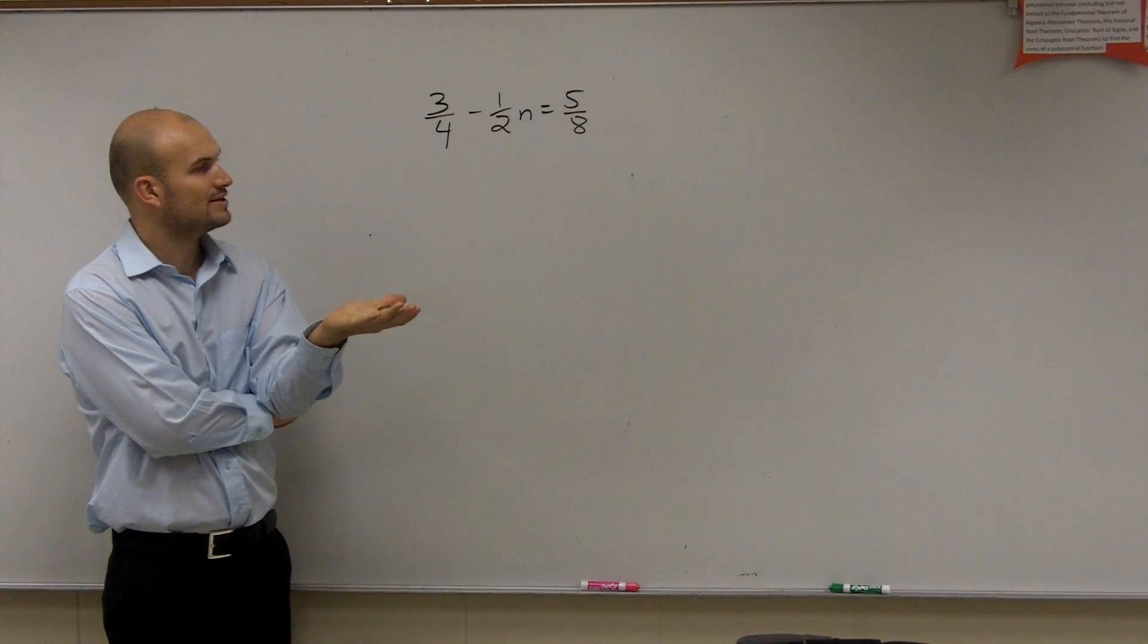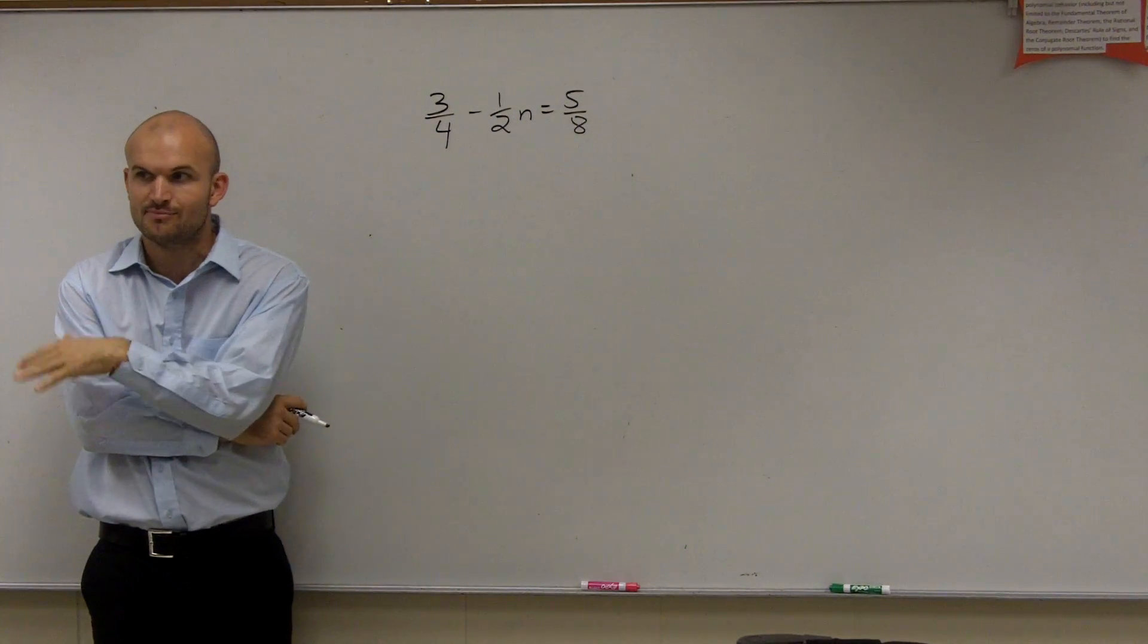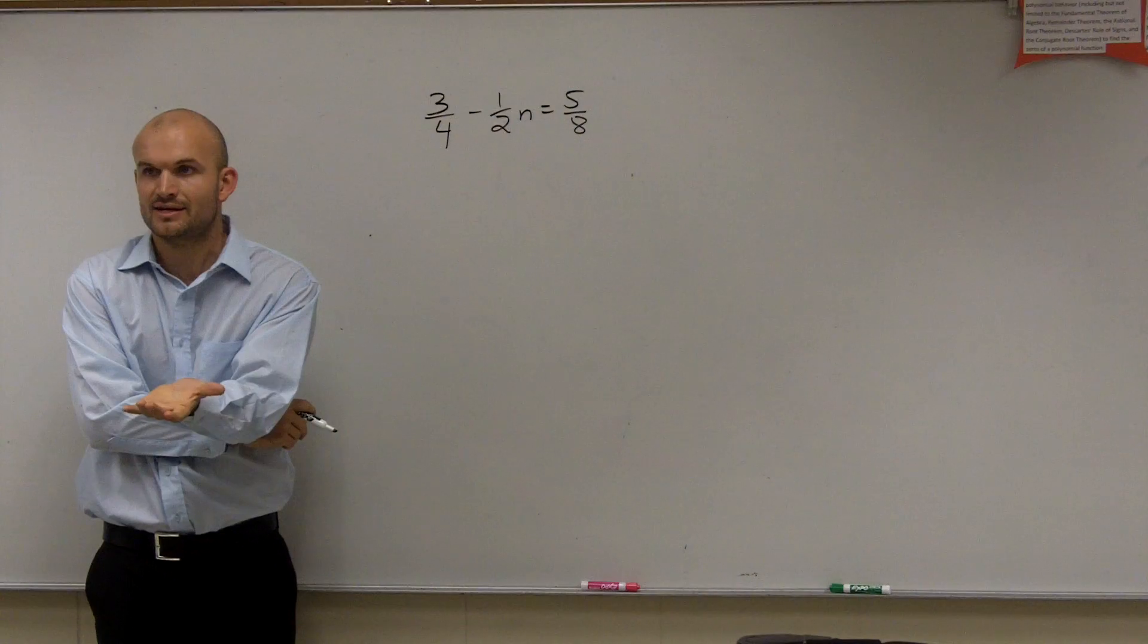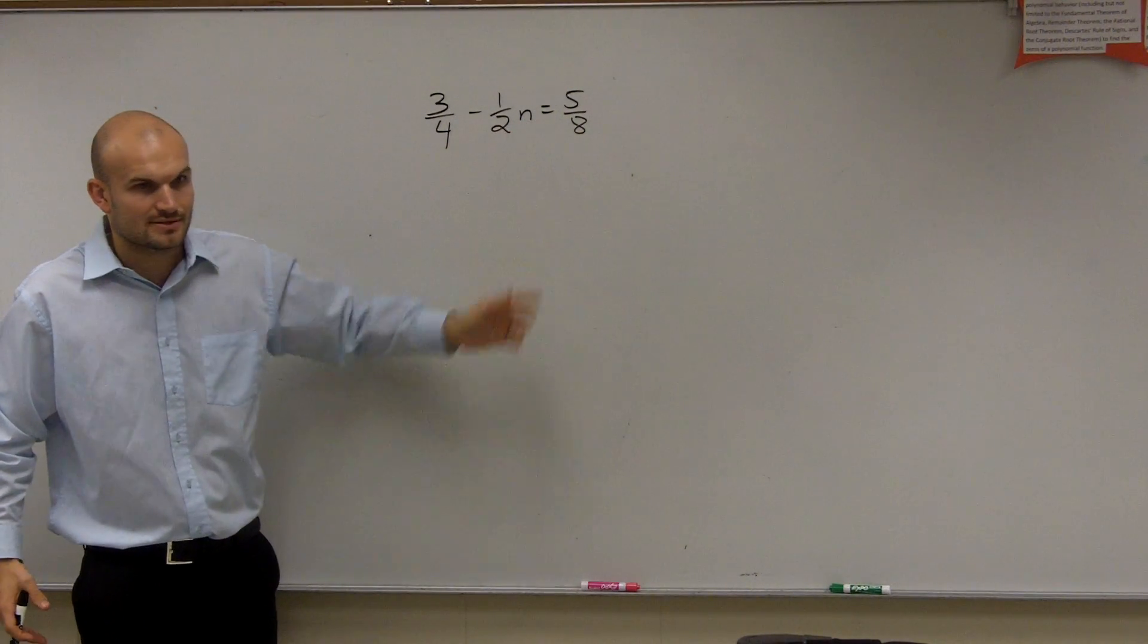So it was pretty easy when we were dealing with fractions when they all had the same fraction, right? Because to get rid of it, we just multiplied by where it was divided. Well, here we have three different denominators.